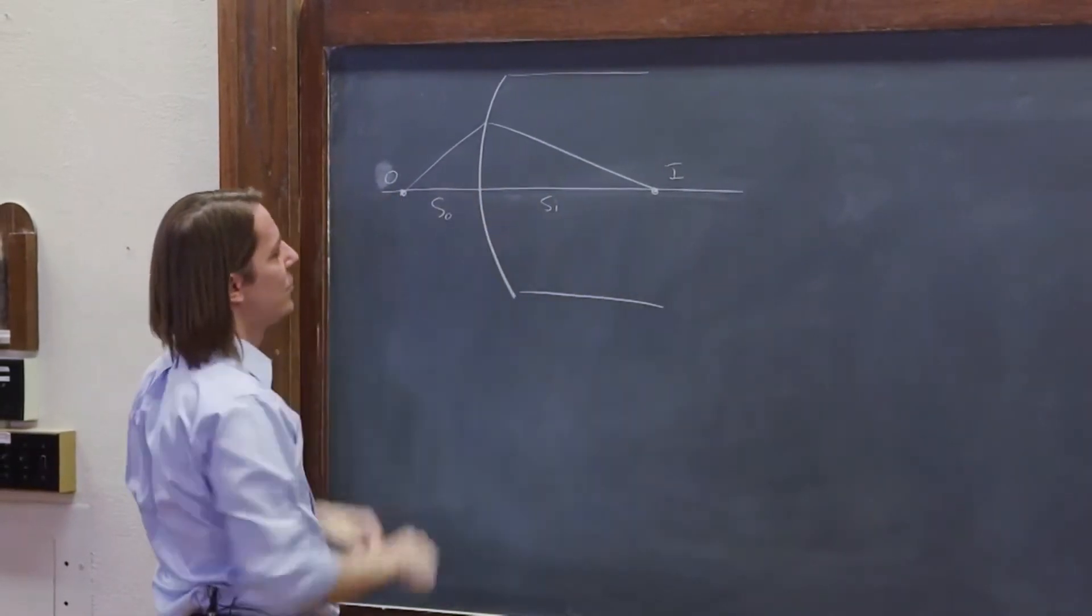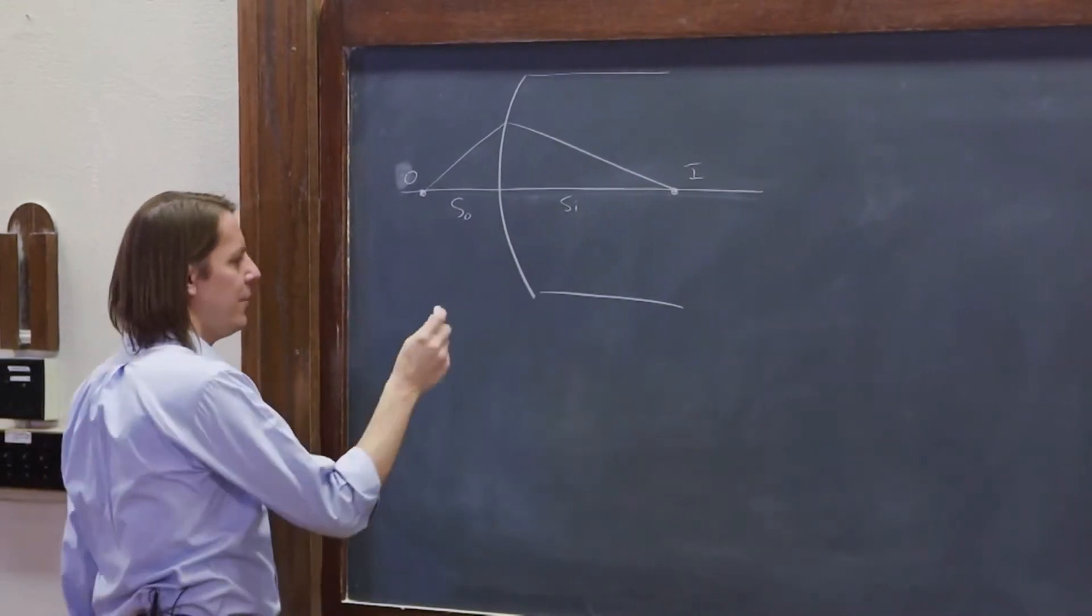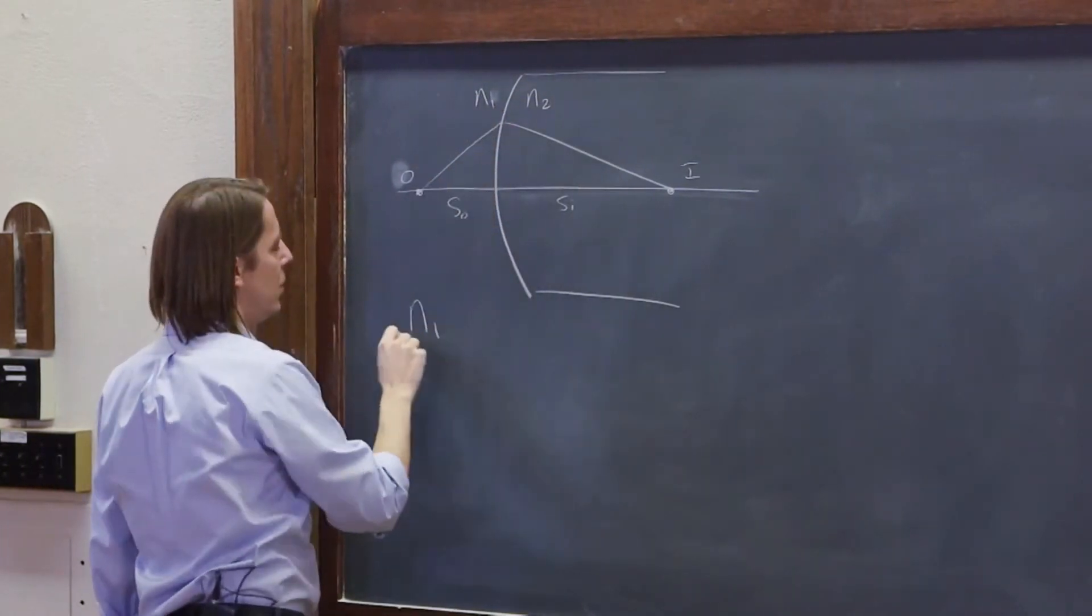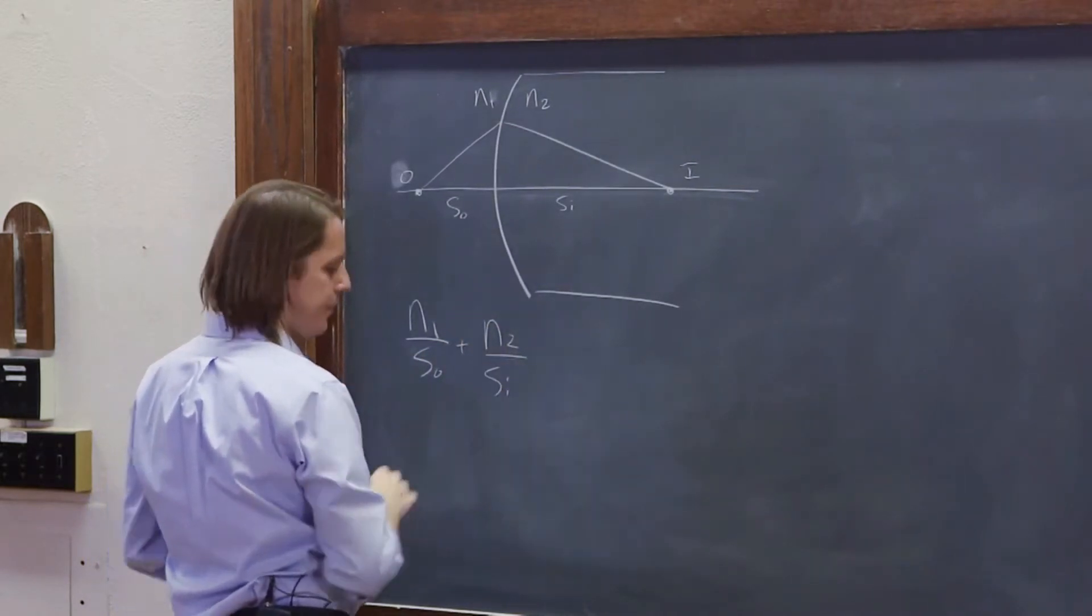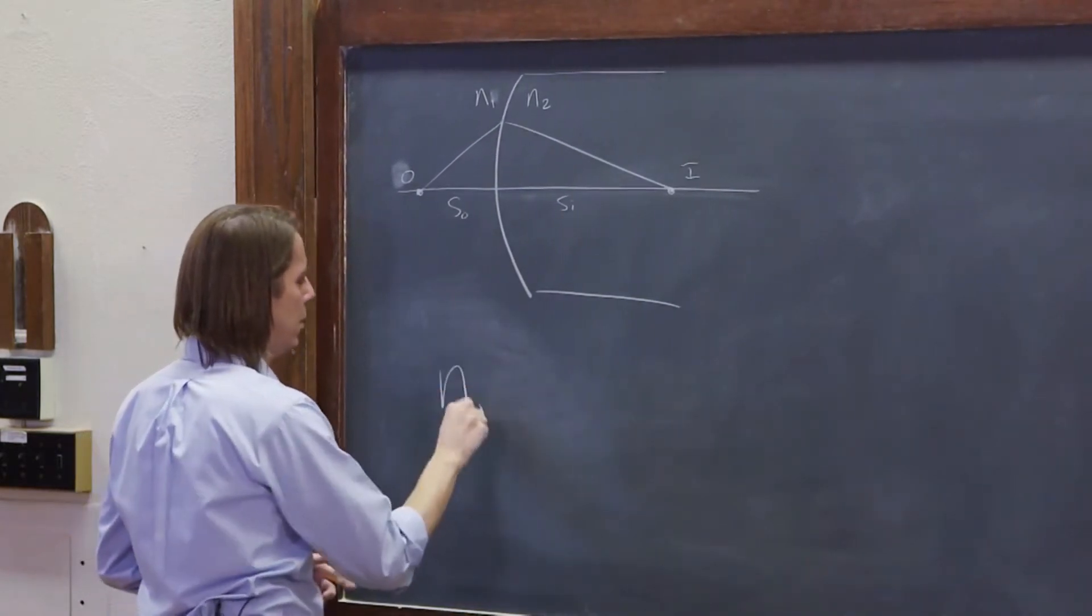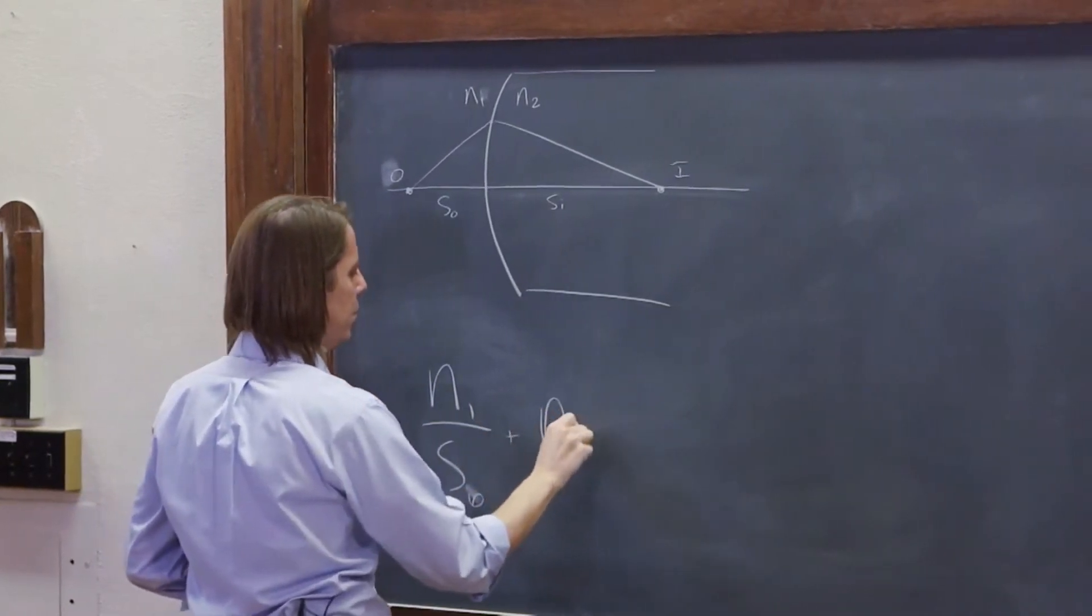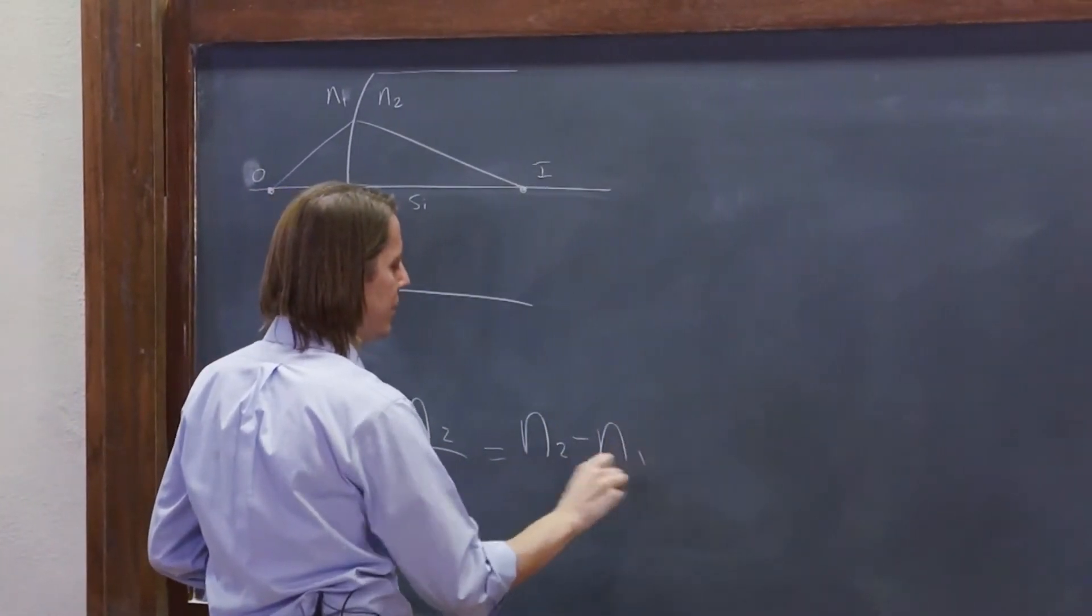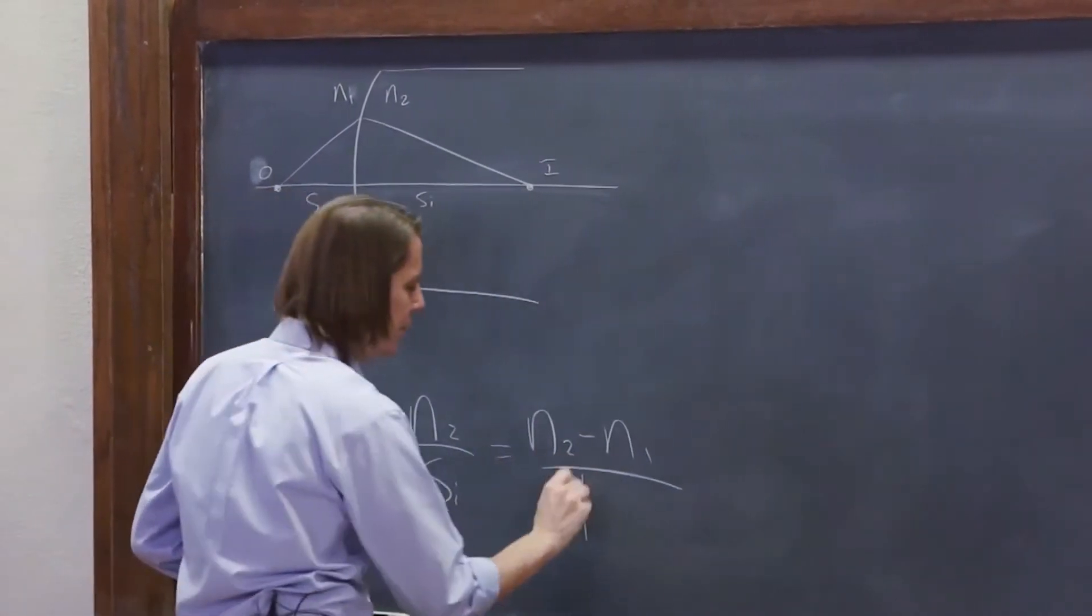So let's remember our equation for the sphere. It's N1, remember this is N1 and this is N2. N1 over the object distance plus N2 over the image distance. Let's write this bigger. N1 over the object distance plus N2 over the image distance equals N2 minus N1 over R.